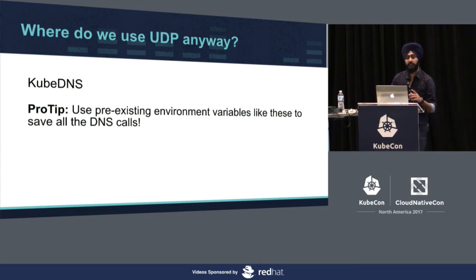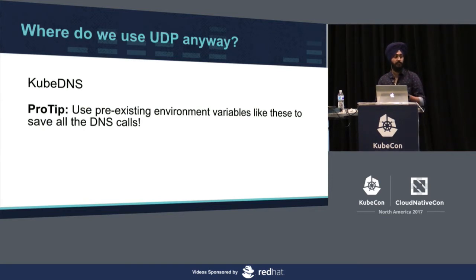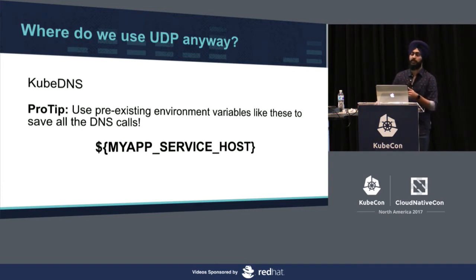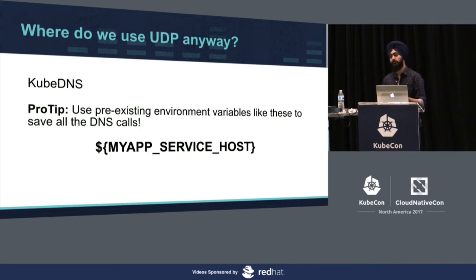Here's a pro tip: if your services call each other a lot, you should probably use the pre-existing environment variables which are exposed in every pod instead of making a DNS call. For every service, you have an environment variable like your service name underscore service underscore host. Similarly for all the ports, and you can save a lot on DNS calls. We were actually having some latency problems and when we switched to this, we were able to increase the throughput a lot.